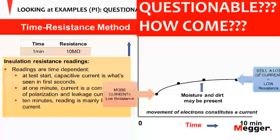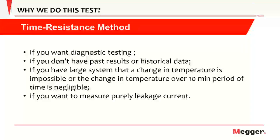Summary: the time resistance method — PI and DAR — is a must if you want diagnostic testing, if you don't have past test results or historical data, or if you have a large system where the change in temperature over the 10-minute period is negligible. Also use this if you want to measure purely leakage current. That brings me to the end of this presentation.